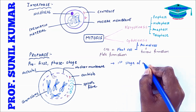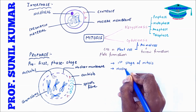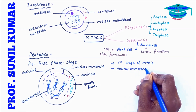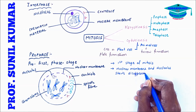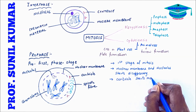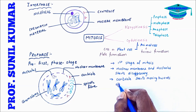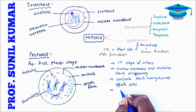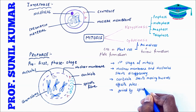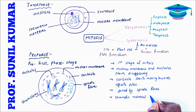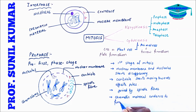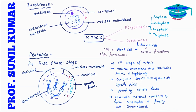For prophase in an exam, you should write: it is the first stage of mitosis; the nuclear membrane and nucleolus start disappearing; centrioles start moving toward opposite poles and are connected by spindle fibers; the chromatin material undergoes condensation to form chromatids, which further condense to form chromosomes.